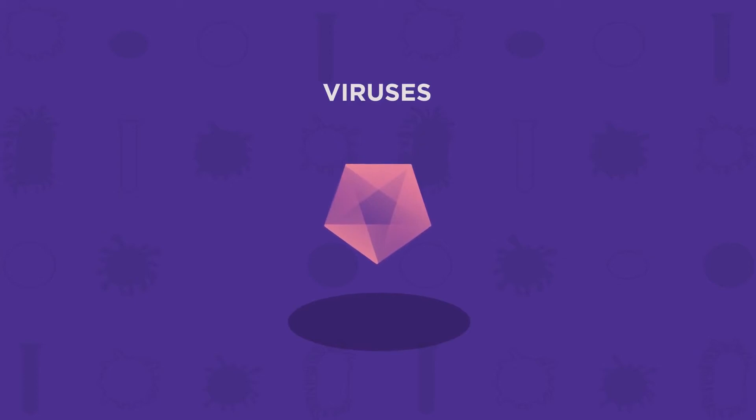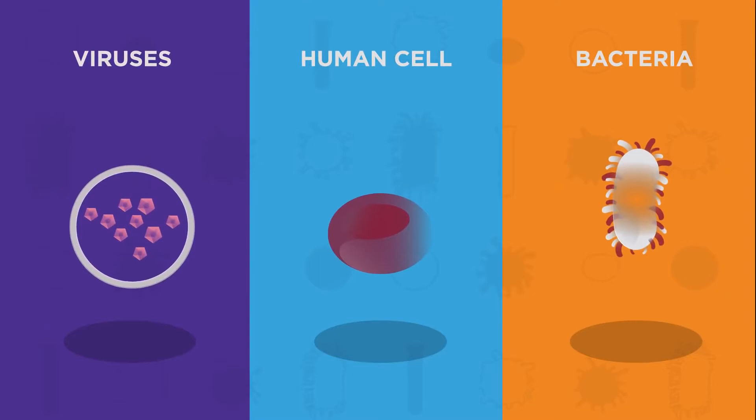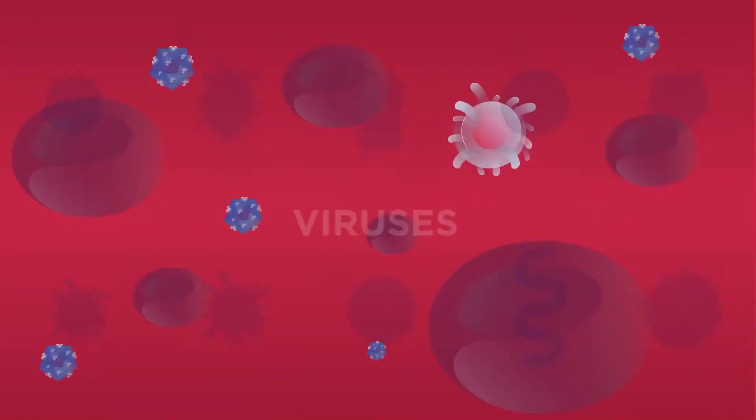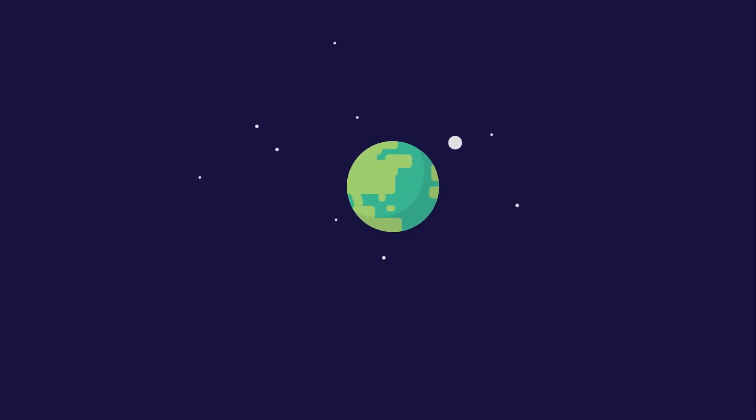Viruses are a type of microorganism. They are too small to be seen by the naked eye, much smaller than bacteria, and about 100 times smaller than human cells. They come in many different shapes and are present wherever there are cells to infect. In fact, viruses are the most common biological unit on Earth, outnumbering all other types combined.